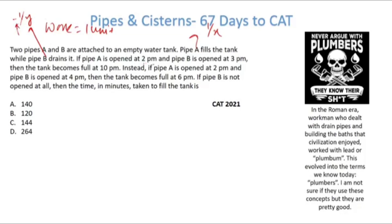Now pipe A is opened at 2pm, pipe B is opened at 3pm. The tank becomes full at 10pm. So 2 to 10 is 8 hours, 8 times 1/x, and 3 to 10 means 7 hours, 7 times 1/y. That is one unit of work, basically filling the tank.